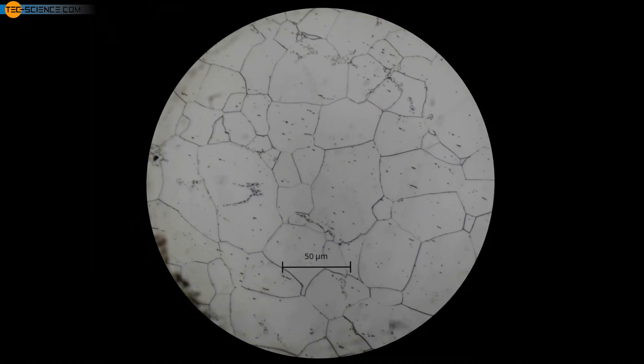The micrograph shows the microstructure of soft iron. The grain boundaries are made visible by a special etching of the sample.